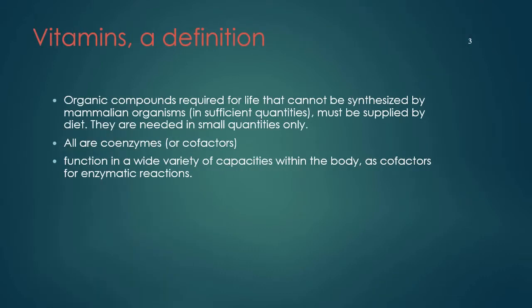So what is the definition of vitamin? Vitamin is an organic compound required for life that cannot be synthesized by mammalian organisms in sufficient quantities. It must be supplied by diet. Usually these vitamins are needed in small quantities only, and they all function as co-enzymes or co-factors in a wide variety of capacities within the body, as co-factors for many enzymatic reactions.